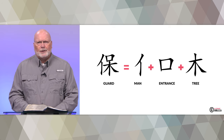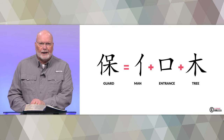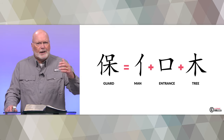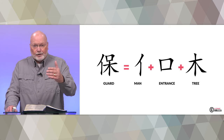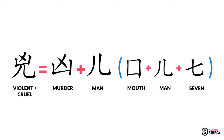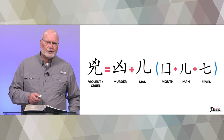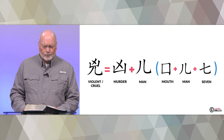The next character is for 'violent' or 'cruel.' In Genesis chapter 4, verses 8 to 15, we read the story of Cain and Abel, and eventually Lamech, a descendant of Cain's, who claimed that if anyone put upon him he would avenge himself seven times. In the Chinese language, the character for violent or cruel is a combination of murder, a man, the symbol for mouth, man, and seven. All of that combines to make the idea of violent or cruel — paralleling what we see in Genesis 4:8 to 15.